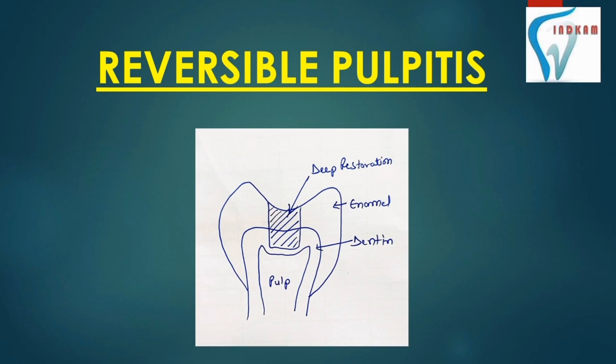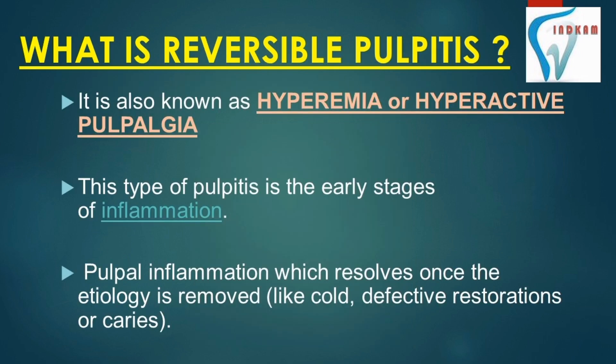Today we are going to learn about reversible pulpitis. Other names for this are hyperemia or hyperactive pulpalgia. This is a type of inflammation which occurs in early stages, and when the stimulus or etiology is removed, the inflammation resolves itself. Stimuli such as cold, defective restoration, or caries — when removed, the inflammation also goes.